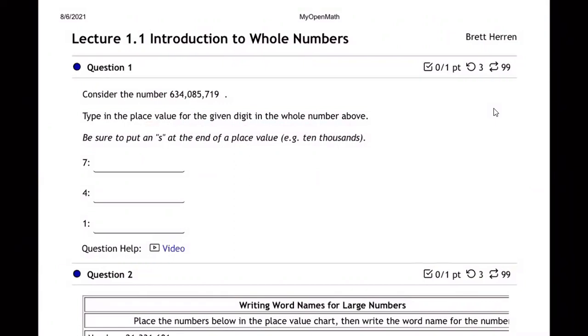So for mine, it starts with the 7. Now, do you guys remember how the place values go? Let me write this number out with more space. 6, 3, 4, comma, 0, 8, 5, comma, 7, 1, 9. Okay, so how do the place values go?